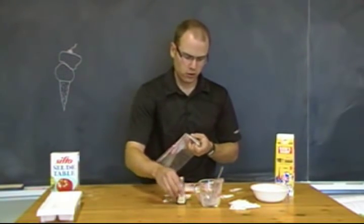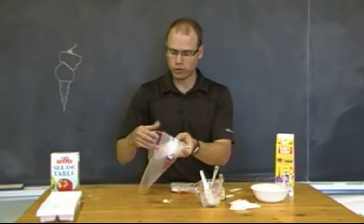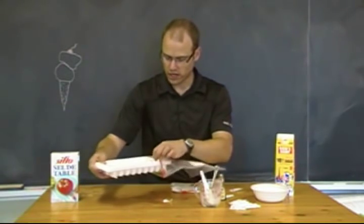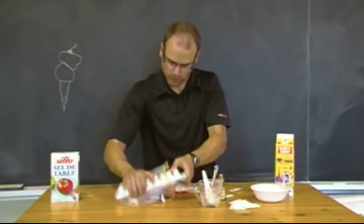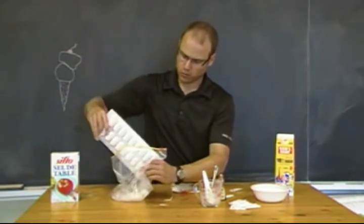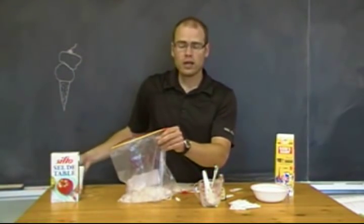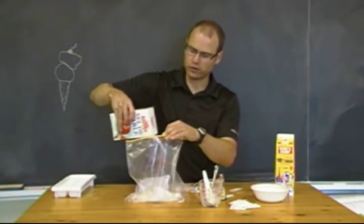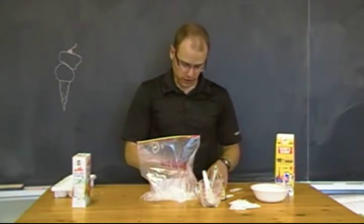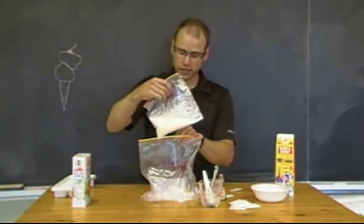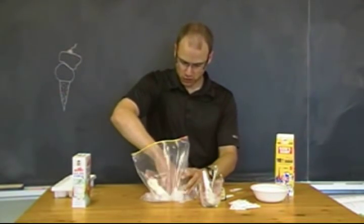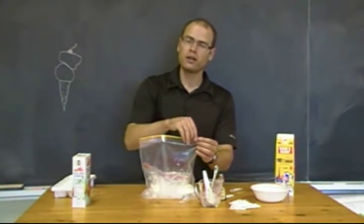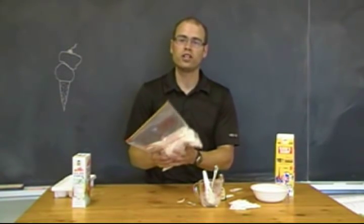In the larger container, put in your ice — a tray of ice is usually good enough. Just insert the tray into the ziplock bag and break all the cubes out. Then sprinkle in the equivalent of a couple tablespoons of salt. Take the small bag with your ingredients and place it inside the larger bag, making sure it is surrounded by the ice. Leave a little bit of air in the larger bag and seal it off.